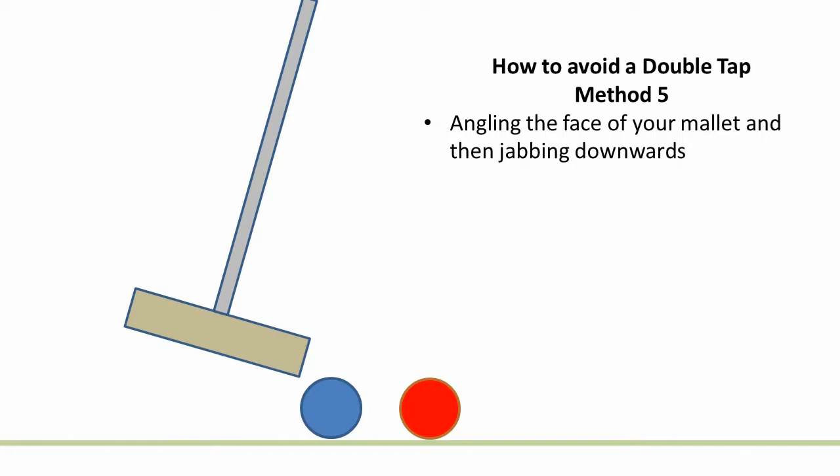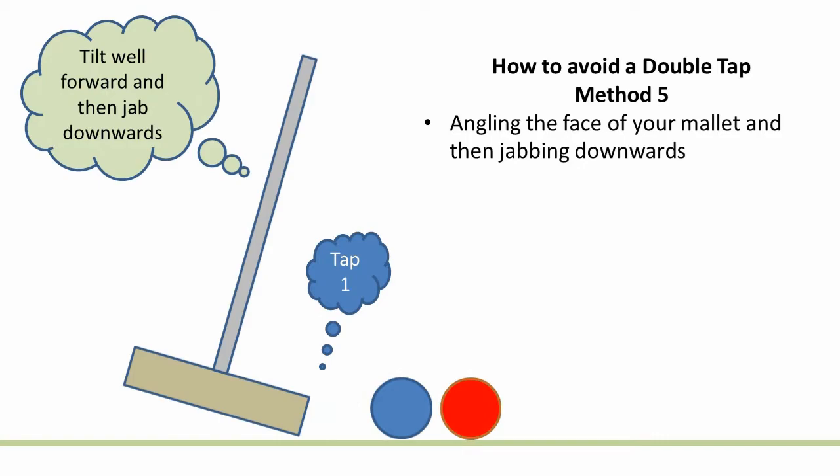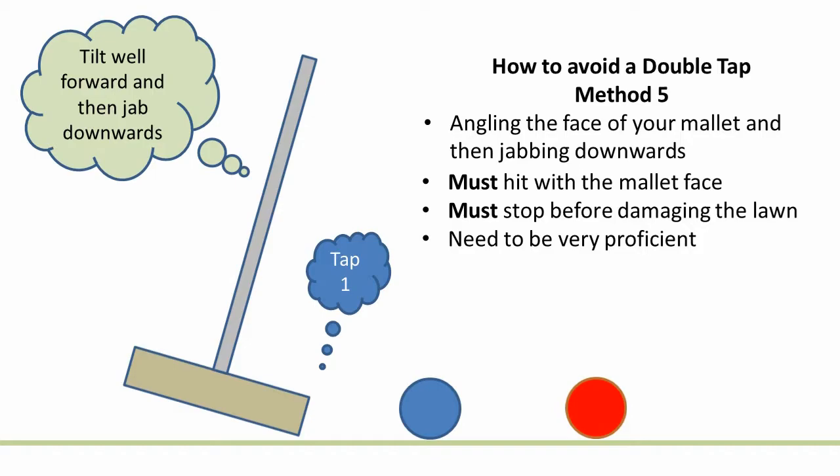Yet another technique is to tilt your mallet well forward and then rapidly jab it downwards. Again, remember that you must strike the ball with the face of your mallet and in addition you must avoid lawn damage. This technique requires probably even more practice to master.